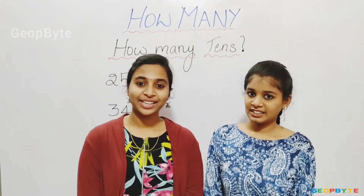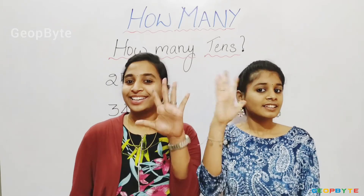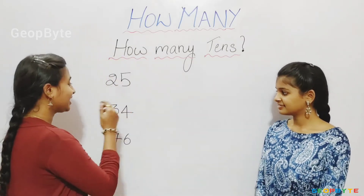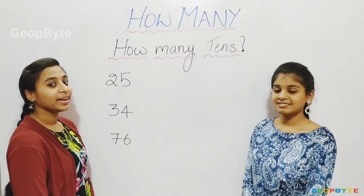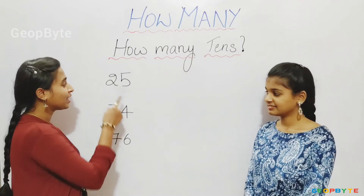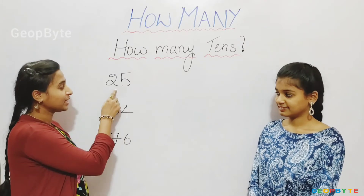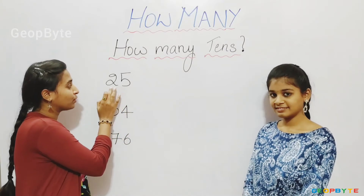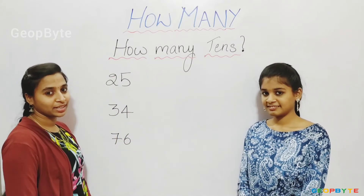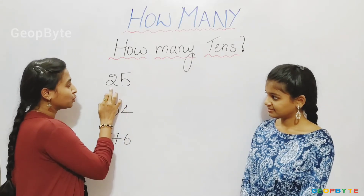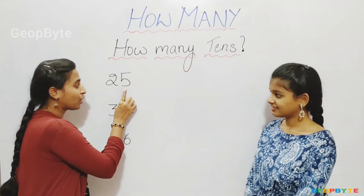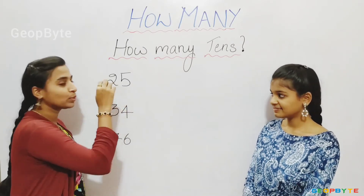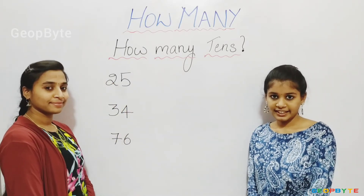Now let us get into the topic — how many tens? Hey kids, see here. We have a few numbers. Now let us identify how many tens are there in each number. Always in a number, the first digit says how many tens are there. See — 2, 5, 25. That means 5 ones and 2 tens. We got 2 tens in the number 25. Let us write 2 tens.